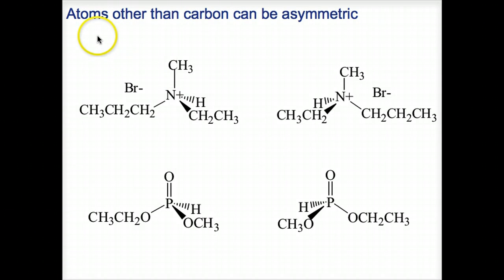I mentioned earlier there are atoms other than carbon that can be asymmetric. Here we've got nitrogen, examples of nitrogen and phosphorus. When nitrogen or phosphorus has four different groups or atoms attached to it, it has a tetrahedral geometry and it is a chirality center. Another compound with a chirality center can exist as enantiomers. There are two pairs of enantiomers shown in this slide.